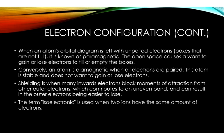Shielding is when many inwards electrons block moments of attraction from other outer electrons, which contributes to an uneven bond and can result in the outer electrons being easier to lose. The term isoelectronic is used when 2 ions have the same amount of electrons.